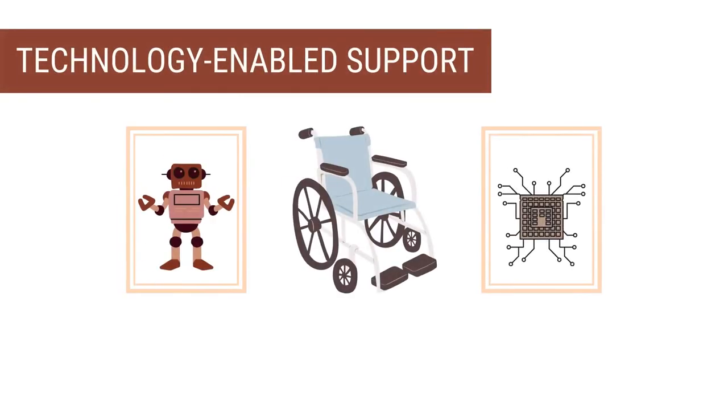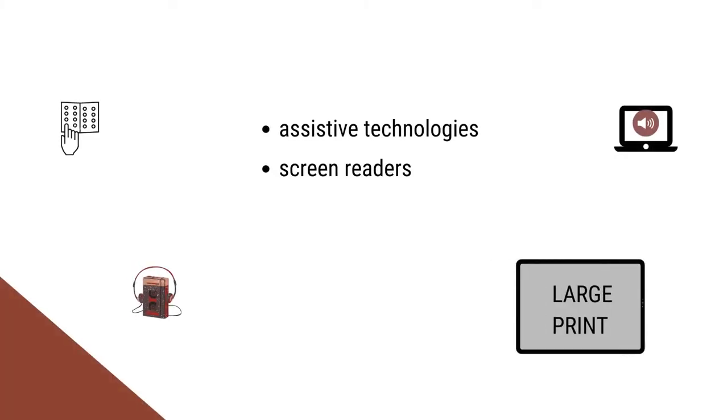Finally, let us talk about the technological support that we can provide to such learners in open and distance learning system. The technology used in open and distance learning mostly matches with the technology needed by learners with disabilities, like assistive technologies, screen readers, and different resources in formats like Braille, large print, and other formats. All these technologies can be provided to learners with disabilities so that they don't have any problem.